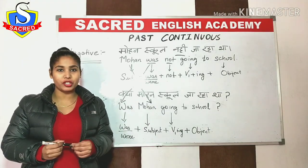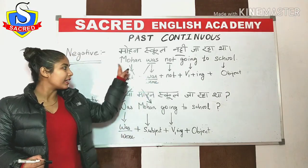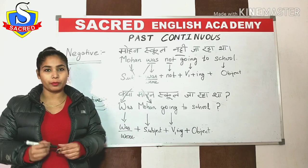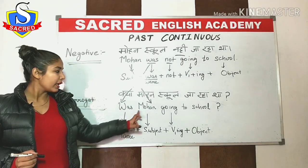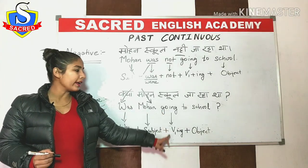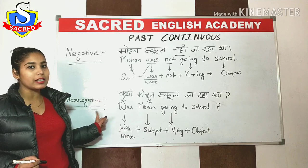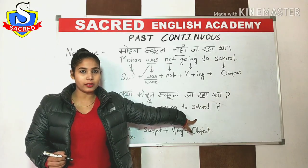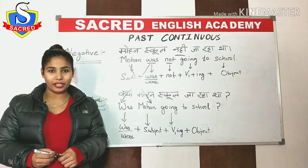So in an interrogative sentence, 'was' comes first, then the subject 'Mohan', then the verb first form 'going', then the object 'school', and importantly, a question mark is placed at the end of the sentence because the question mark indicates interrogation. This covers the negative and interrogative forms.